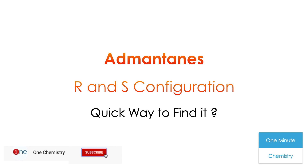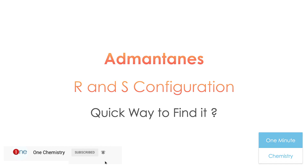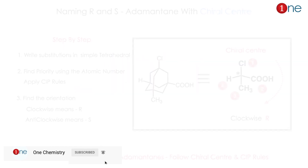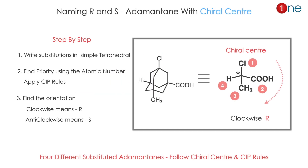Welcome to One Chemistry. We are in the one minute chemistry series. Today it's adamantane — we will see how we can find R and S configuration of it. The first thing we will see is the R and S configuration of adamantane.